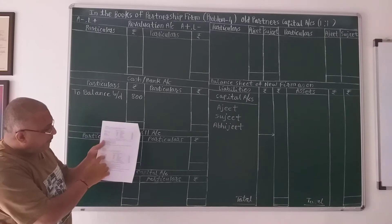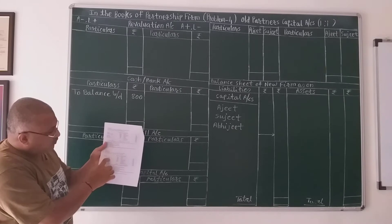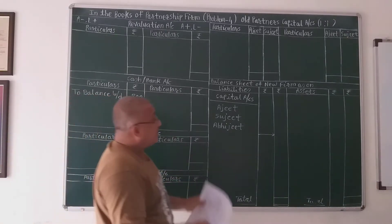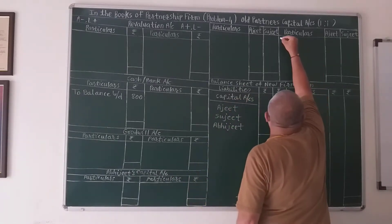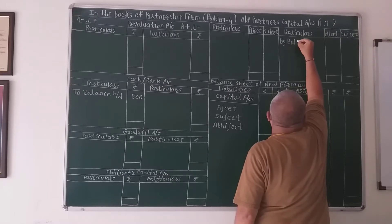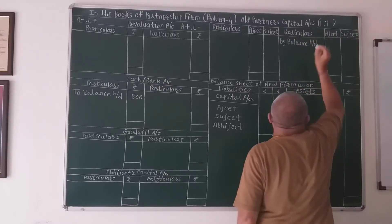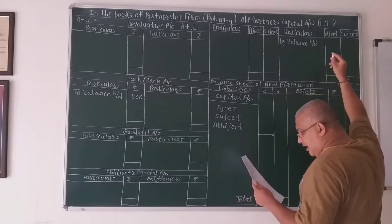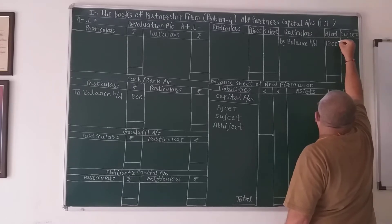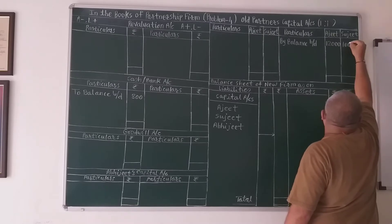Old partners' capital account credit side, by balance brought down. Ajit's amount is 12,000 and Sujit's amount is 10,000.